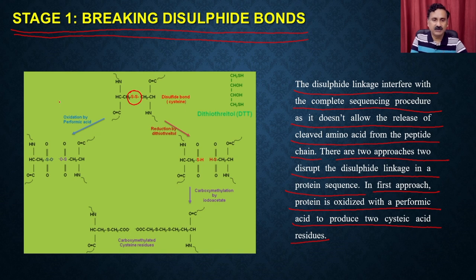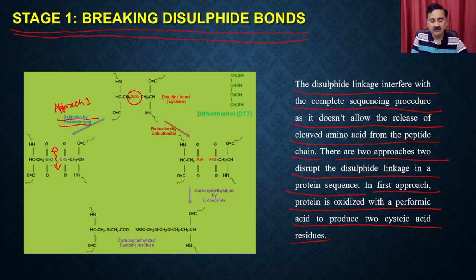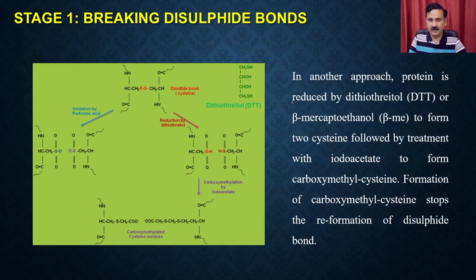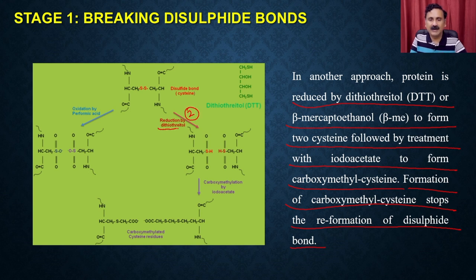In approach 1, you use oxidation with performic acid, which breaks the linkage between the disulfide bonds and gives you two fragments. In approach 2, the protein is reduced by DTT or beta-mercaptoethanol — DTT is a reducing agent. Once you reduce the disulfide linkages, the S-S is converted into S-H, and you have two peptide chains where the disulfide bond is broken.